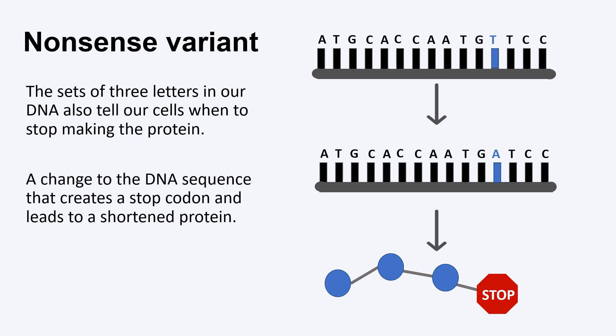Using the same example, changing the second T to an A creates a stop codon in the DNA sequence in place of the amino acid cysteine, therefore shortening the protein.